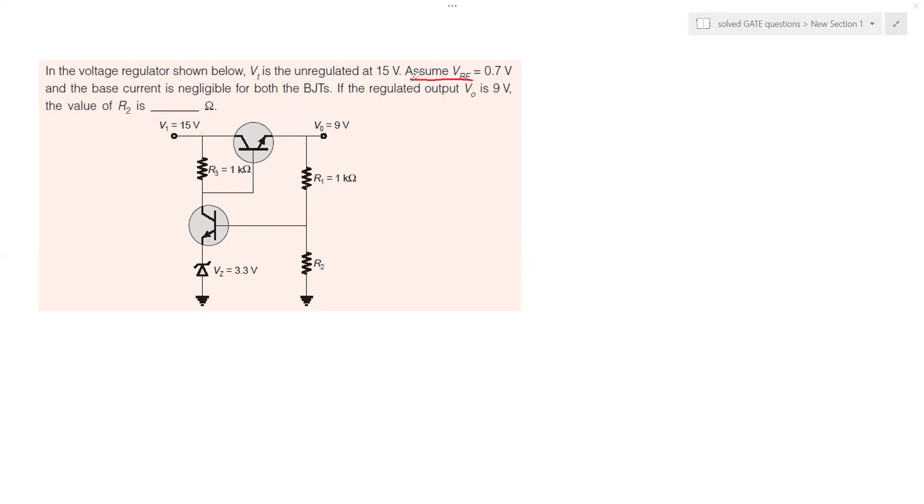We have to assume that base emitter voltage of the transistor is 0.7 volt. Here is the base and the emitter. That's 0.7 volt and the base current Ib is negligible for both the BJTs. BJT1, BJT2, they have negligible base current.